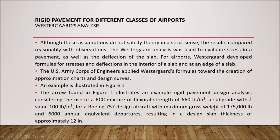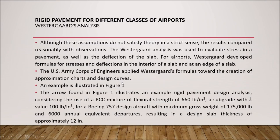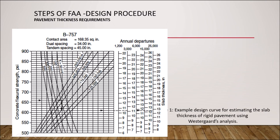The Boeing 757 has a maximum gross weight of 175,000 pounds and an annual departure of 6,000. Starting from the flexural strength of 660 psi, we move down to touch the soil constant k of 100 pounds per cubic inch as given in the question.